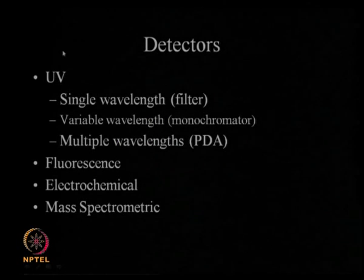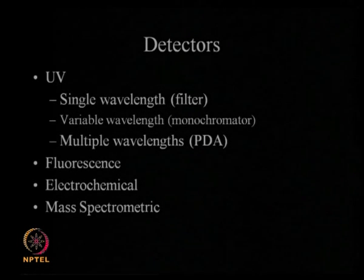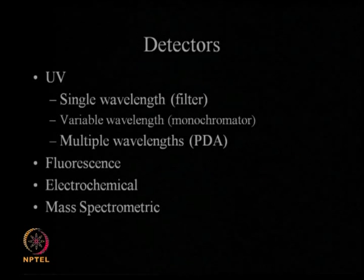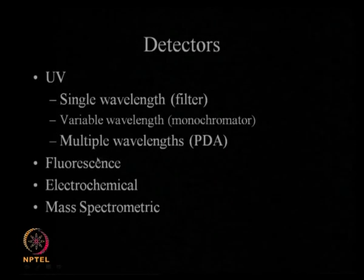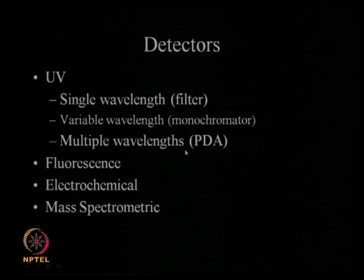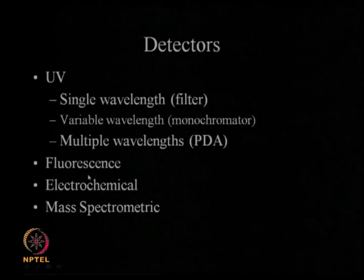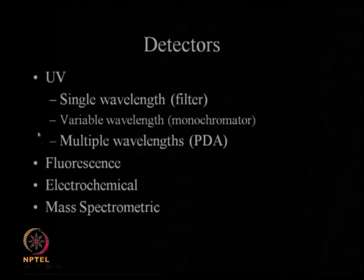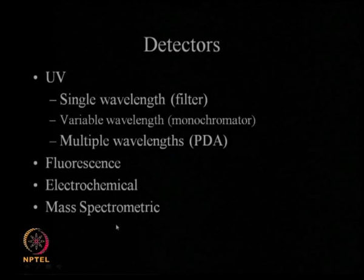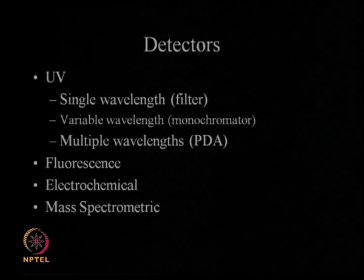A UV detector can be a single wavelength detector matched to one particular wavelength, which is very cheap. We can also have a variable wavelength detector using a monochromator, or a multiple wavelength detector, which are more expensive. Other options include fluorescence detectors, electrochemical detectors, and mass spectrometric detectors. An HPLC connected to a mass spectrometer is called LC-MS; the mass spec detects the mass of the analyte while the HPLC performs the actual separation.